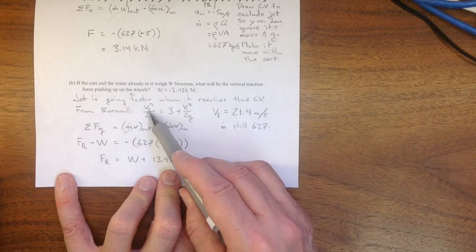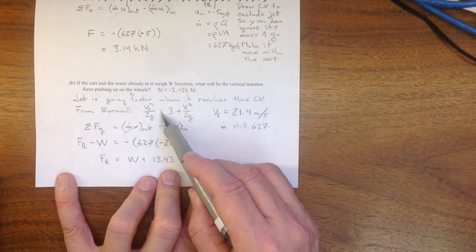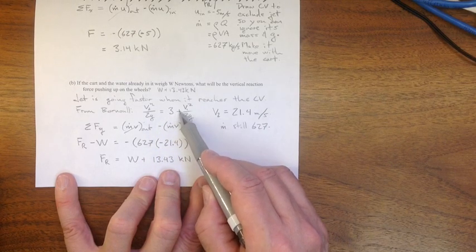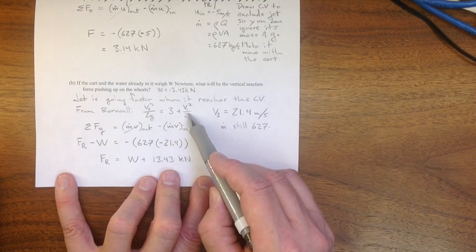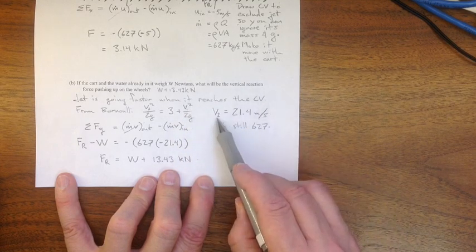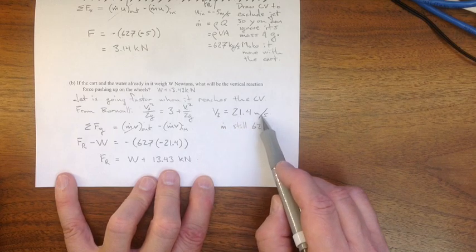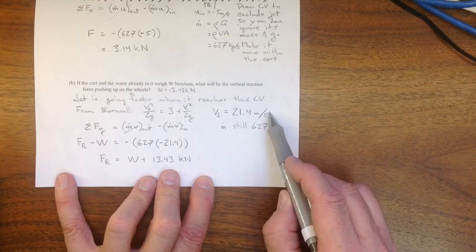Bernoulli's equation, V2 squared over 2g will be 3 meters, plus V1 squared over 2g, for the change in height. That gives us V2 equal to 21.4 meters per second. Just a little bit faster.